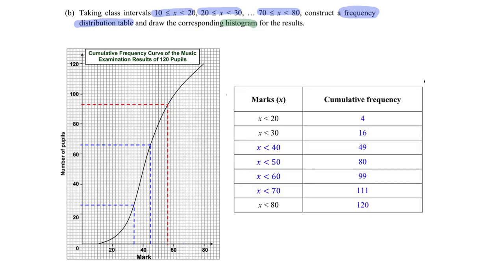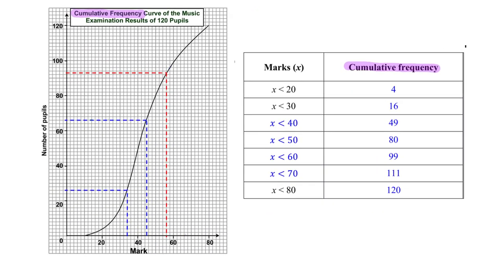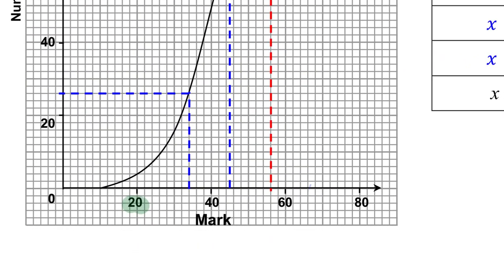This is the cumulative frequency table, not the frequency table yet. Zooming in: for 'less than 20,' I go to x = 20 on the graph and read off 4 students. So 4 students scored less than 20 marks — that's how I get the value of 4.